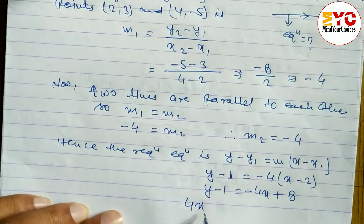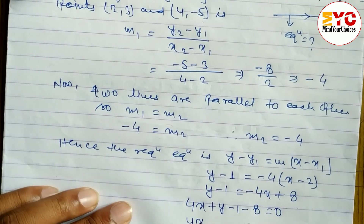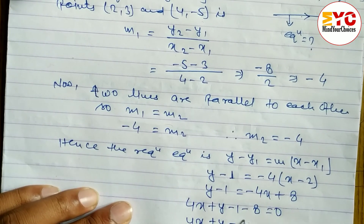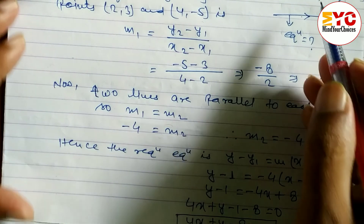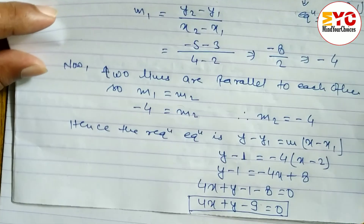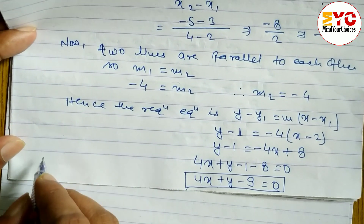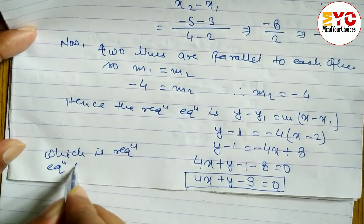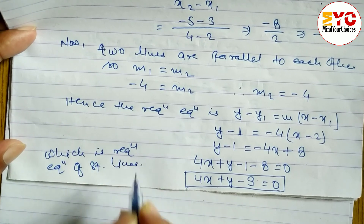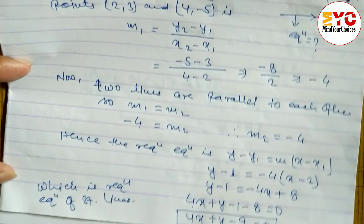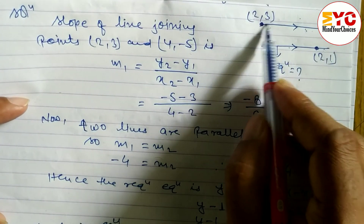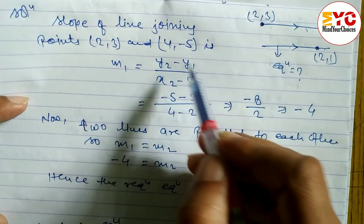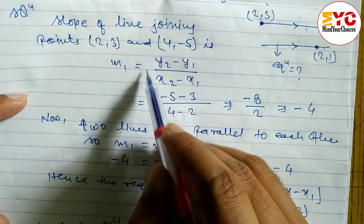Expanding: y minus 1 equals minus 4x plus 8. Bringing all terms to the left side: 4x plus y minus 1 minus 8 equals zero, which gives 4x plus y minus 9 equals zero. This is the required equation of the straight line parallel to the line joining the two given points. You can solve this by any of the methods discussed.